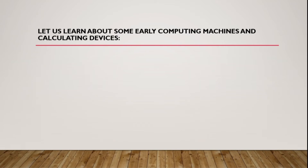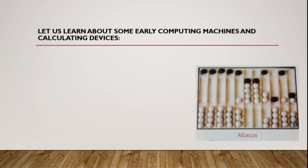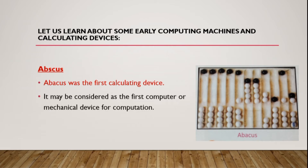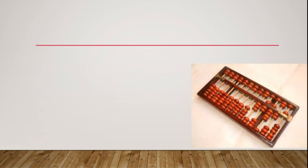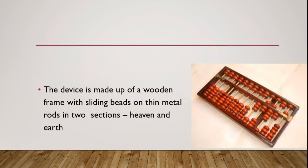First, let us learn about some early computing machines and calculating devices. The abacus was the first calculating device. It may be considered as the first computer or mechanical device for computation. Simple calculations like addition or subtraction can be performed using an abacus. As you can see in this picture, the abacus is made up of a wooden frame with sliding beads on thin metal rods.